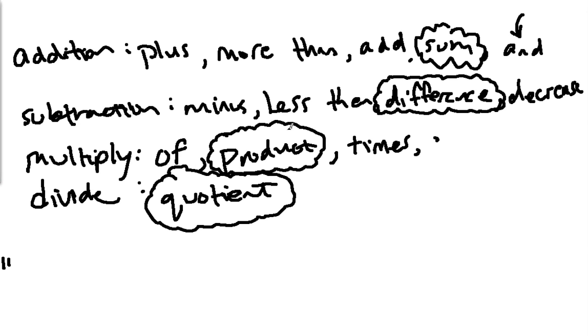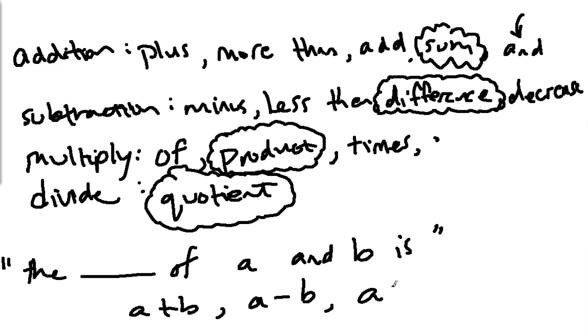And typically a format for these highlighted words, you might see something like the blank of a and b is, and they give you something else. So for example, the sum of a and b is, and that would be a plus b. The difference of a and b is a minus b. The product of a and b is ab.